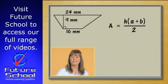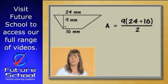area equals the height times the sum of A and B over 2, we have 9 times the sum of 24 and 16 over 2,